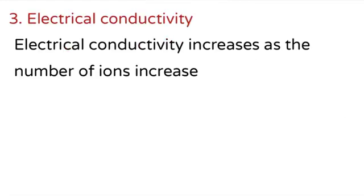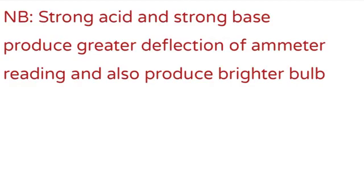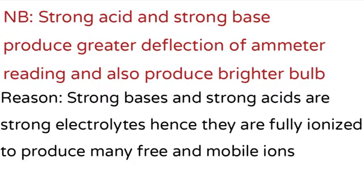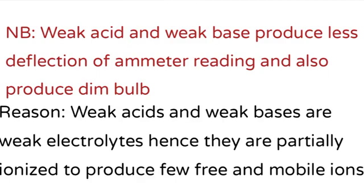Factor number three is electrical conductivity. The electrical conductivity of a solution increases as the number of ions in solution increases. The difference in electrical conductivity is compared using the amount of brightness of a bulb and the amount of deflection on the ammeter. Strong acid and strong base produce greater deflection on the ammeter and a brighter bulb, because they are strong electrolytes — hence fully ionized in solution to yield many free and mobile ions. Weak acid and weak base produce lesser deflection and a dim bulb, because they are weak electrolytes — hence partially ionized to yield fewer ions.